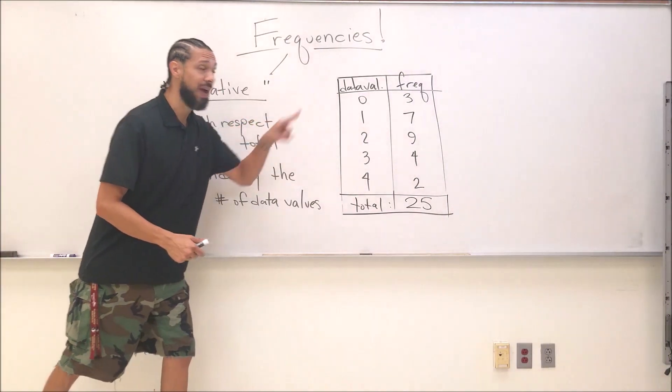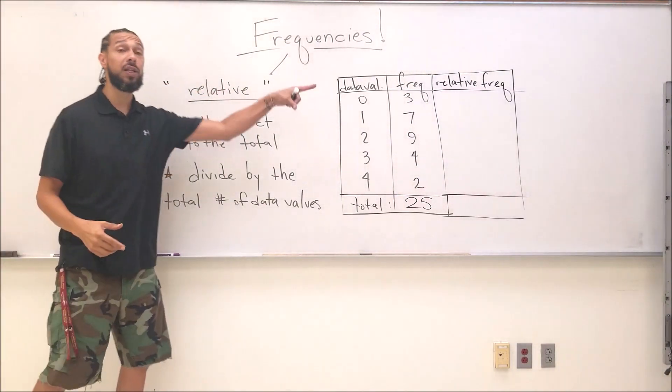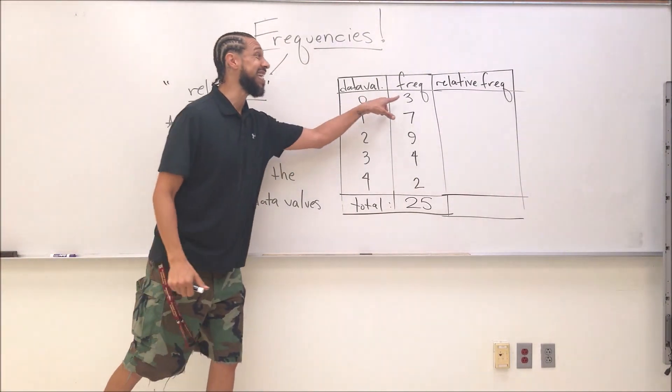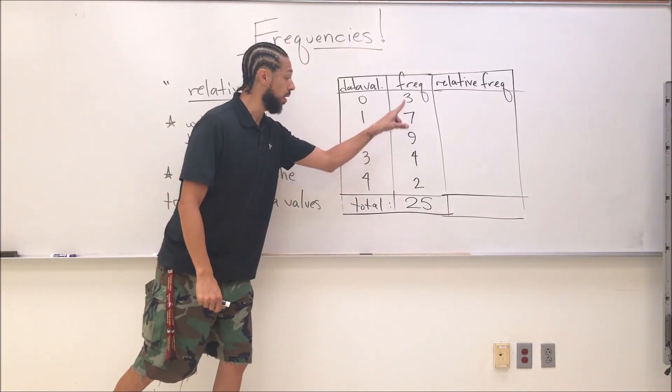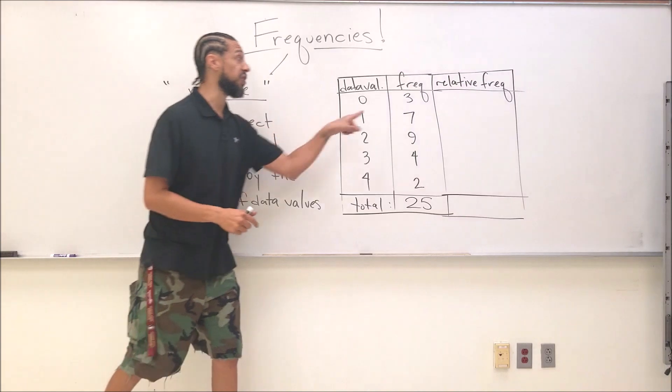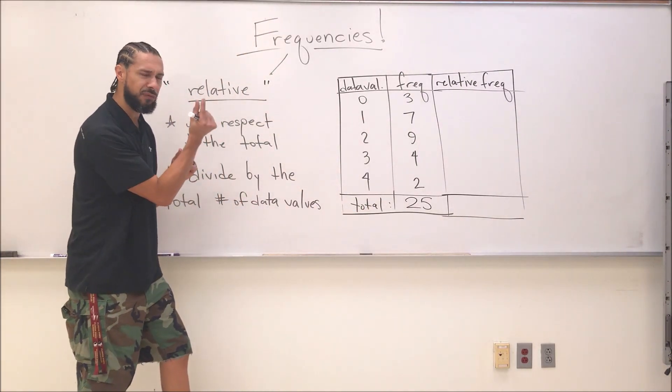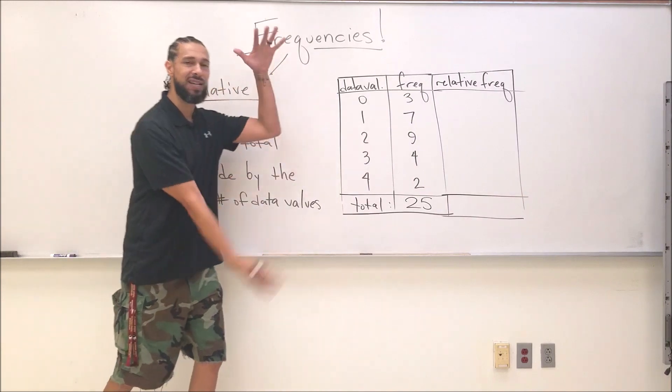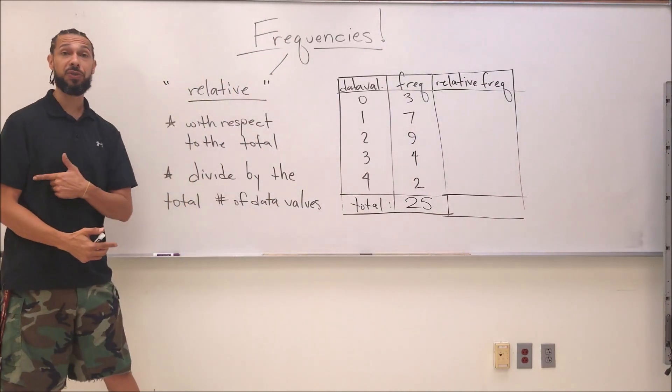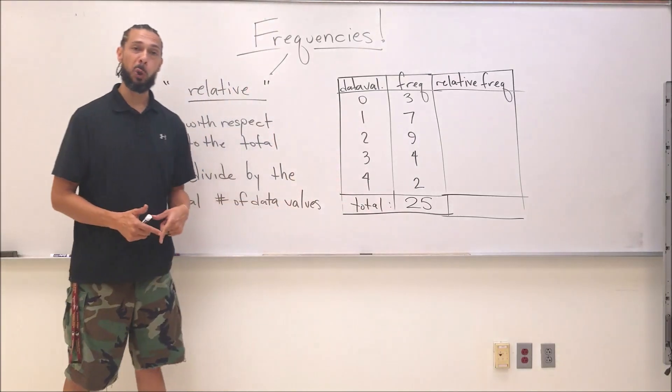Let's figure out what these total up to. How many total data values do I have? 25, exactly right. To find the relative frequency for each data value, let's add a column to this. To get the relative frequency, I'm going to take each frequency and divide by the total number of data values I have. Then I can get the proportion of zeros in my total.